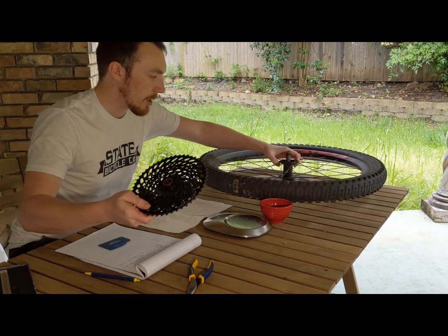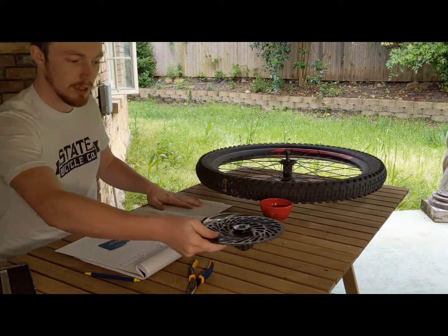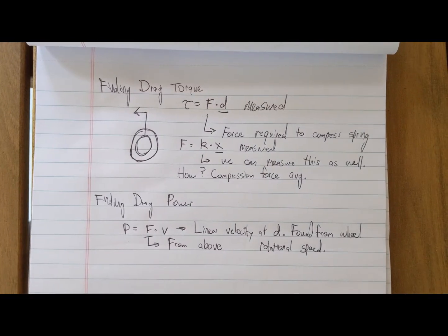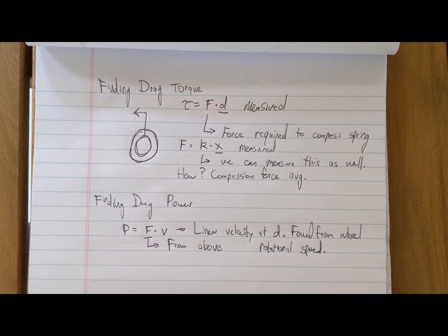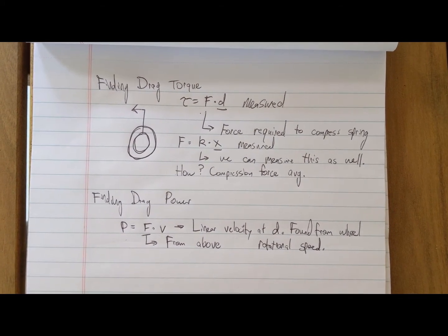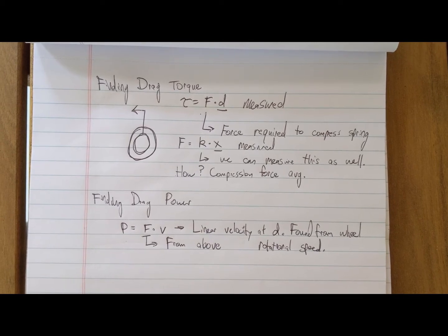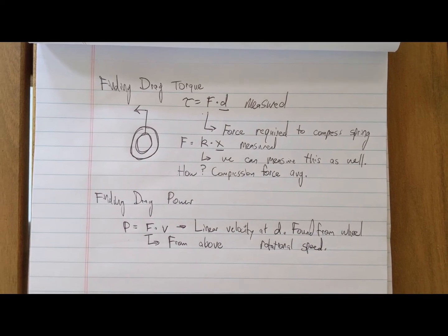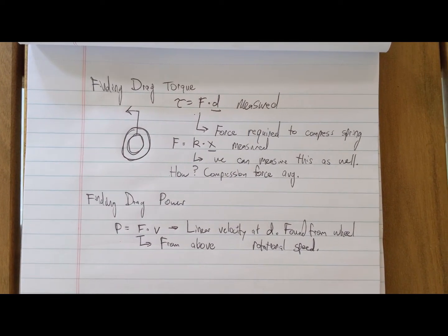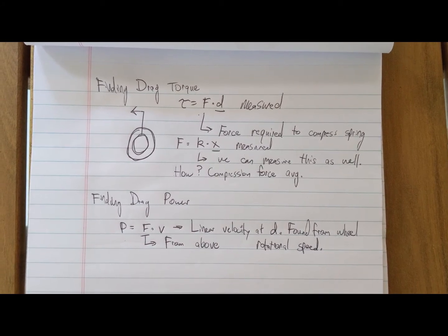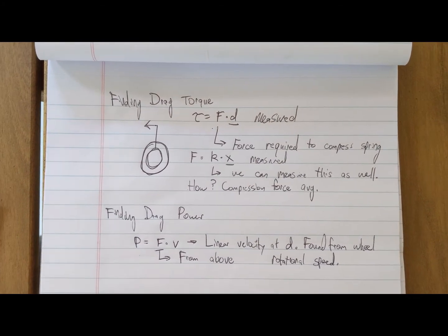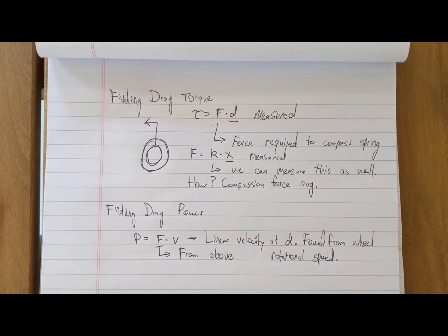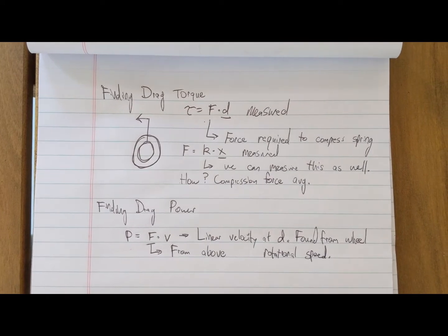Next I want to talk about how we're actually going to be measuring the torque on this freehub. We're going to be using a couple different formulas to find the drag torque and the drag power measured at the hub. The torque is measured as force times distance. In this case, the distance is from the center line of the hub to the area where the pawls and the steel drive ring are interfering. That's really easy to measure.